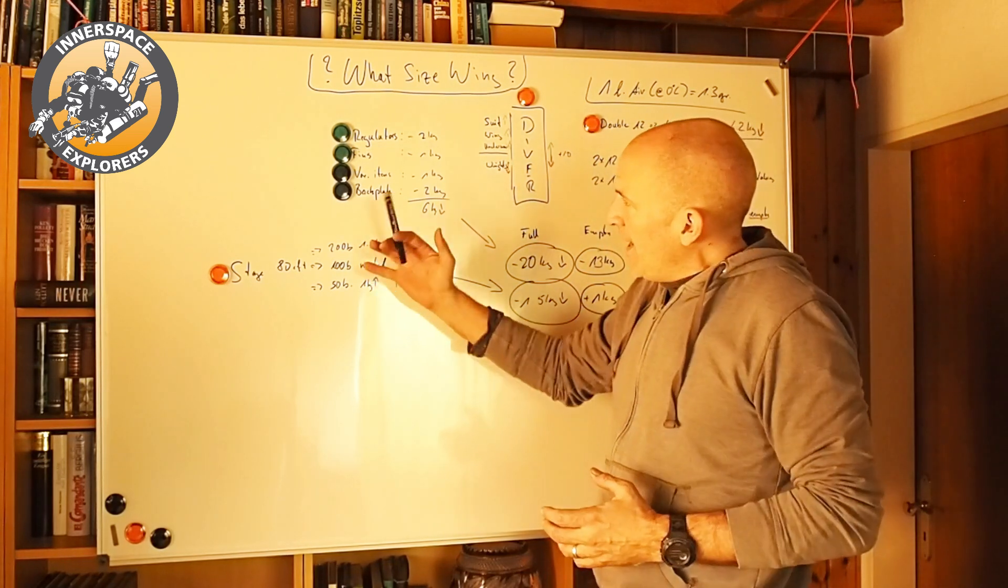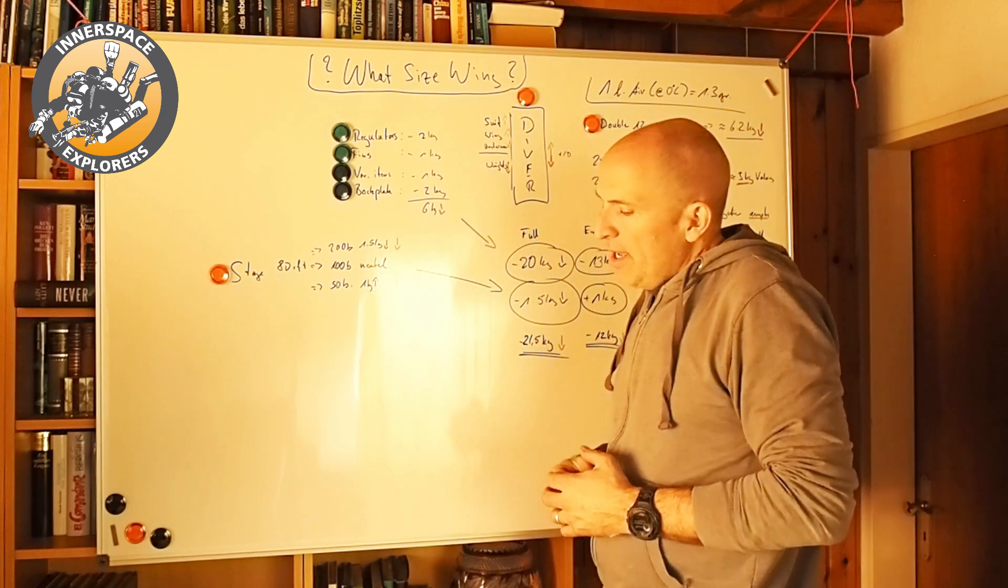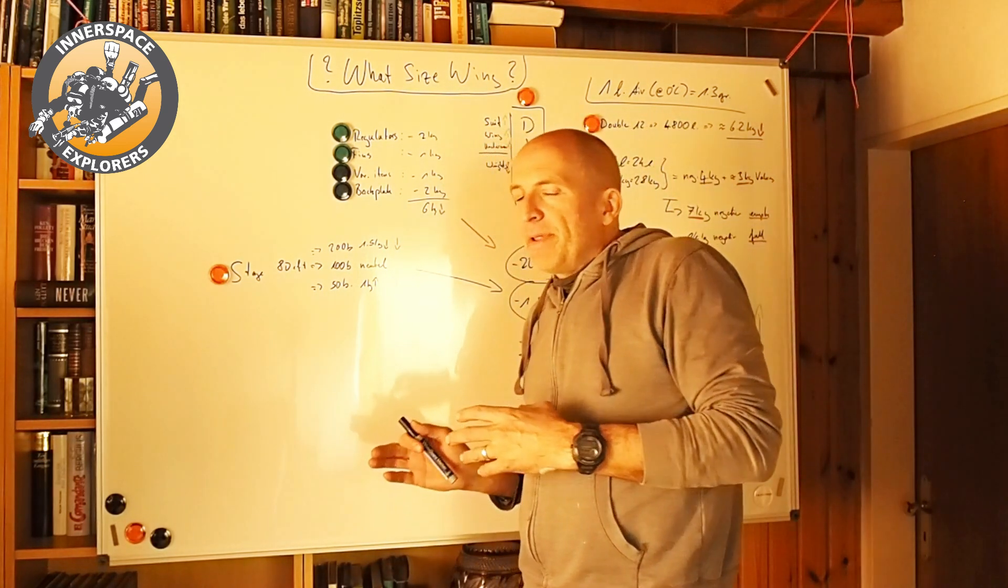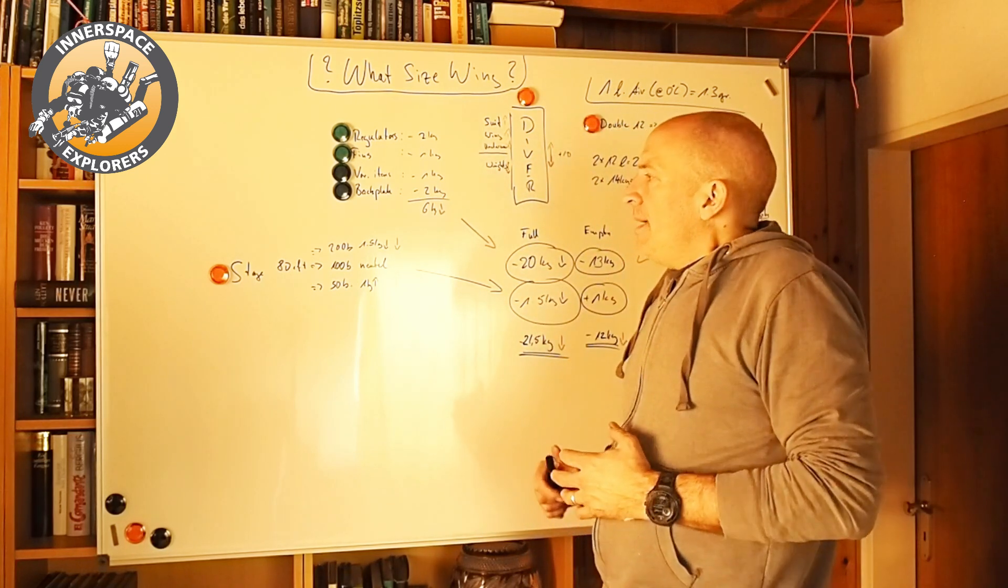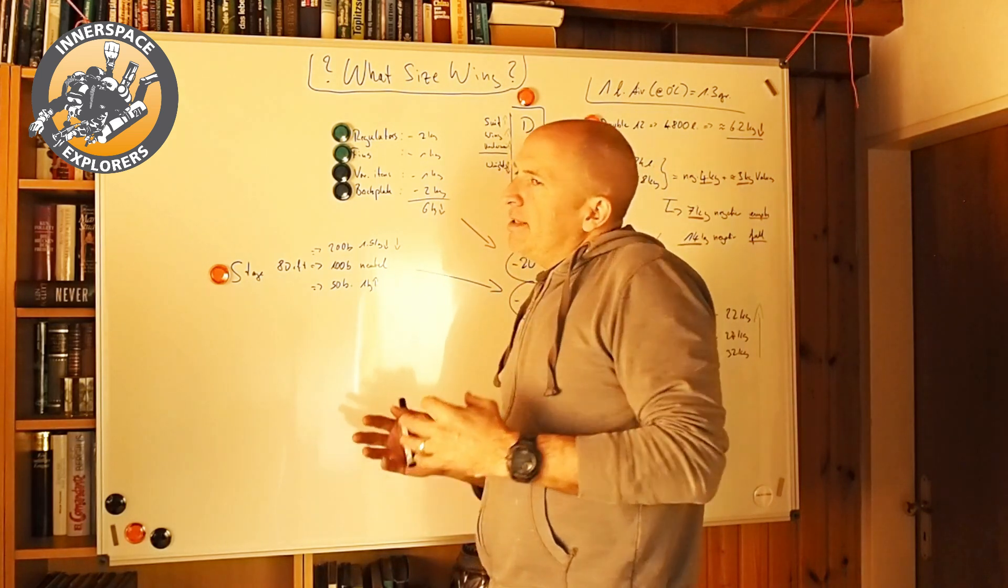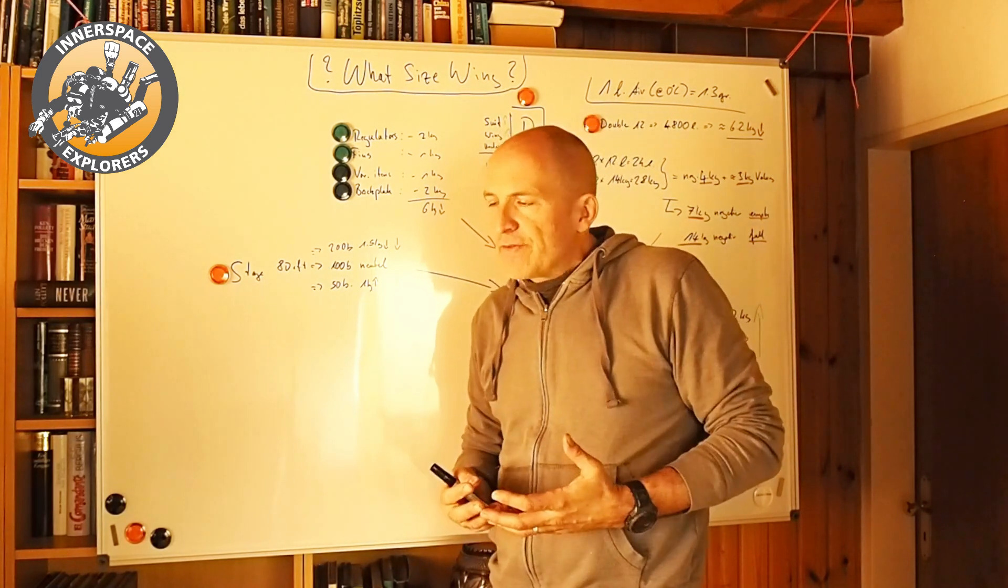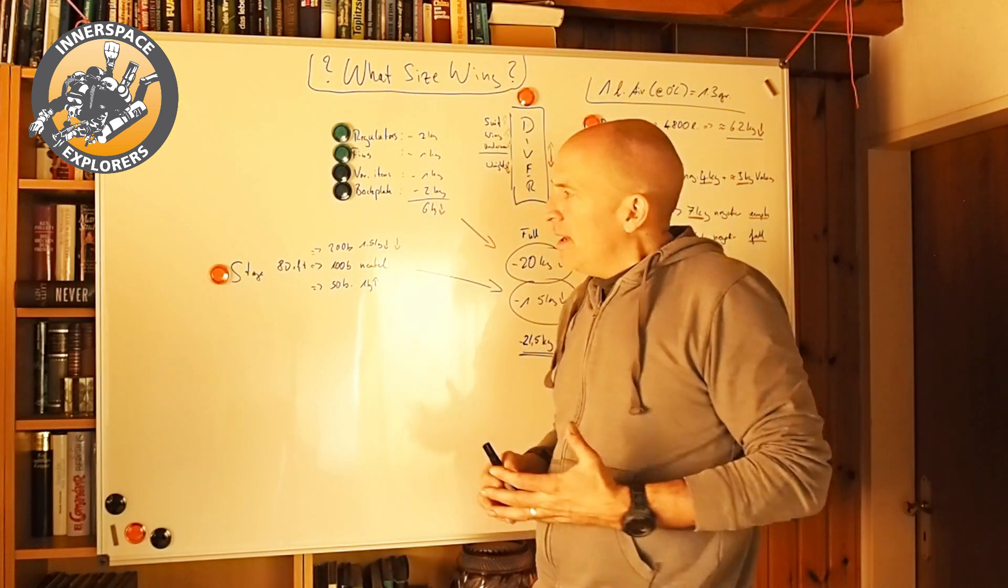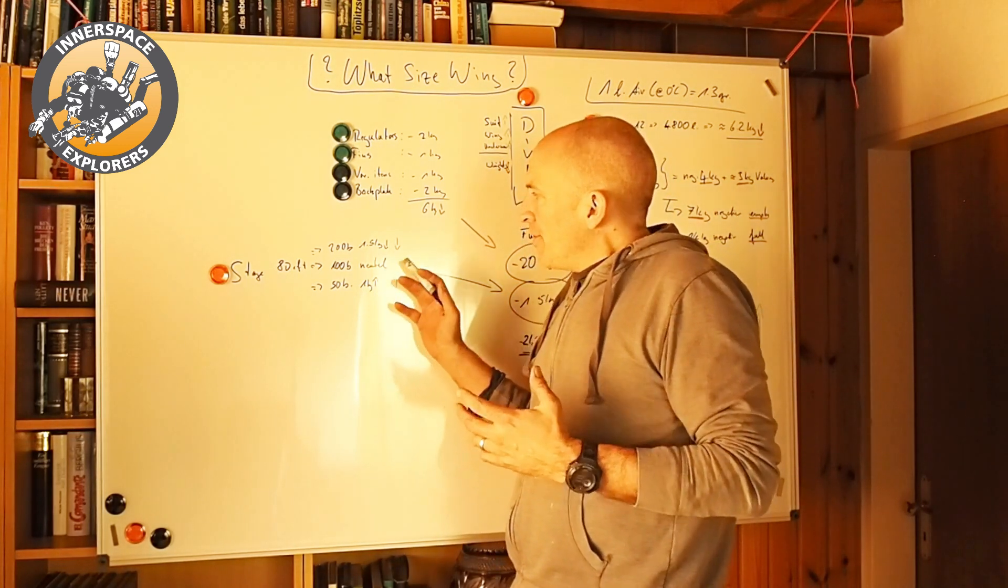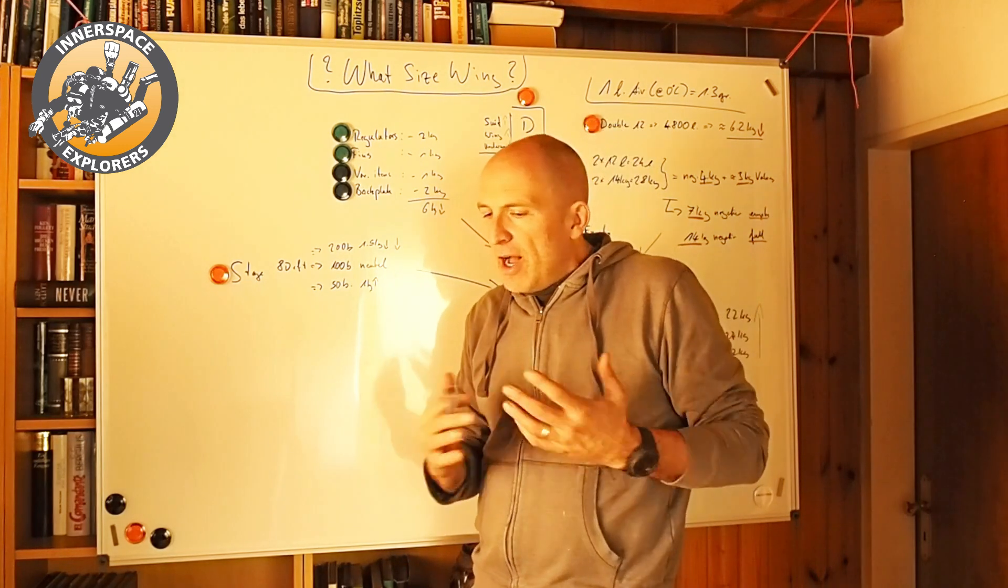Then we have a stage. I use, for that example, an 80 cubic feet stage. And again, this is my gear, that's how I rigged it and that's how it works for me. You have to look at your gear. My concept is that the 80 cubic feet stage is about neutral at 100 bars, so half full.